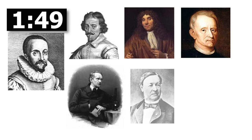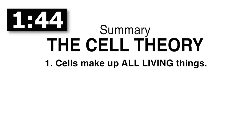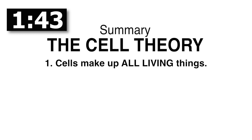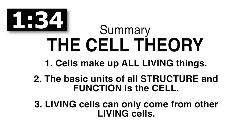We can summarize the cell theory in three major points. Number one: cells make up all living things. Number two: the basic unit of all structure and function is the cell. And number three: living cells can only come from other living cells.